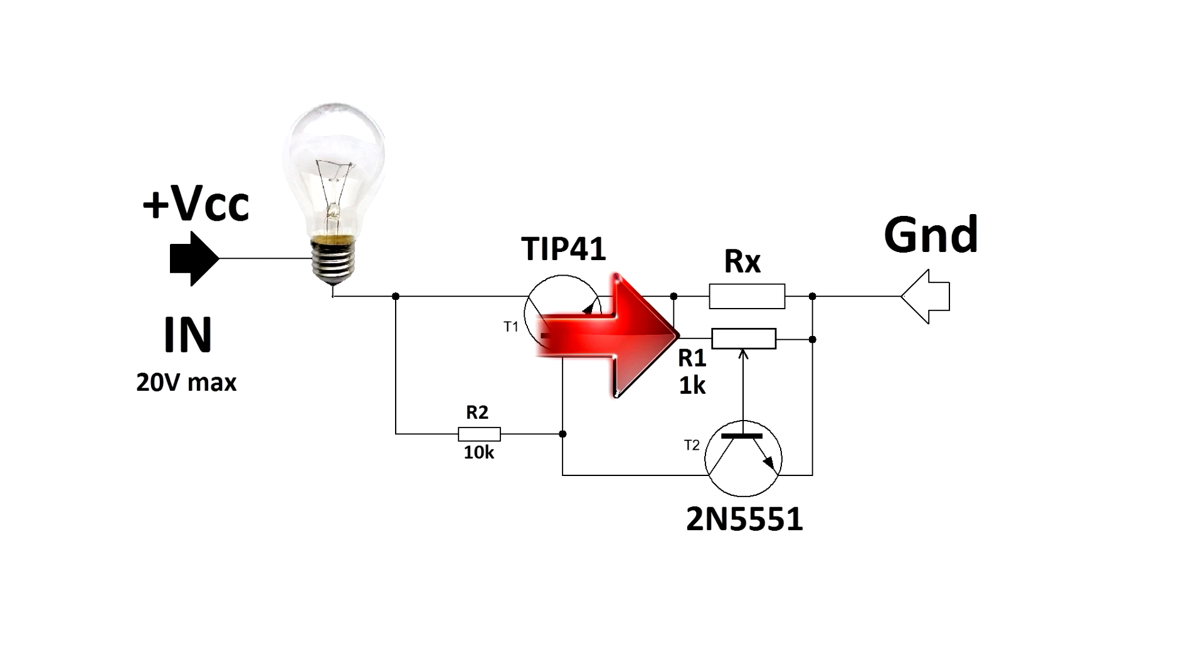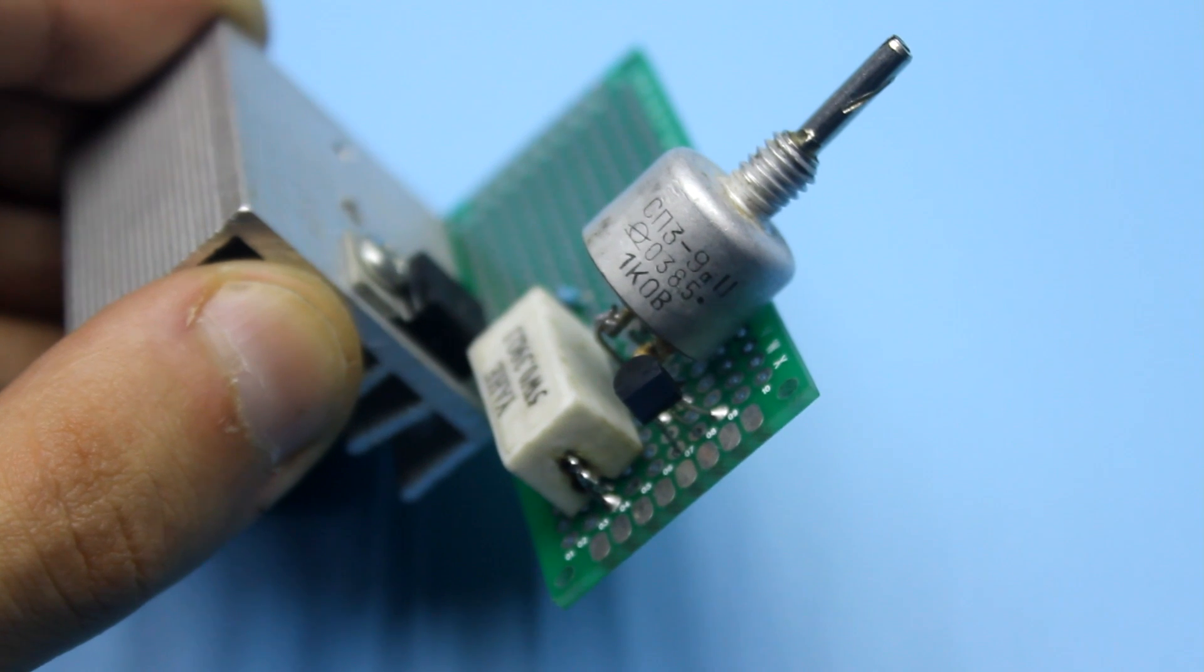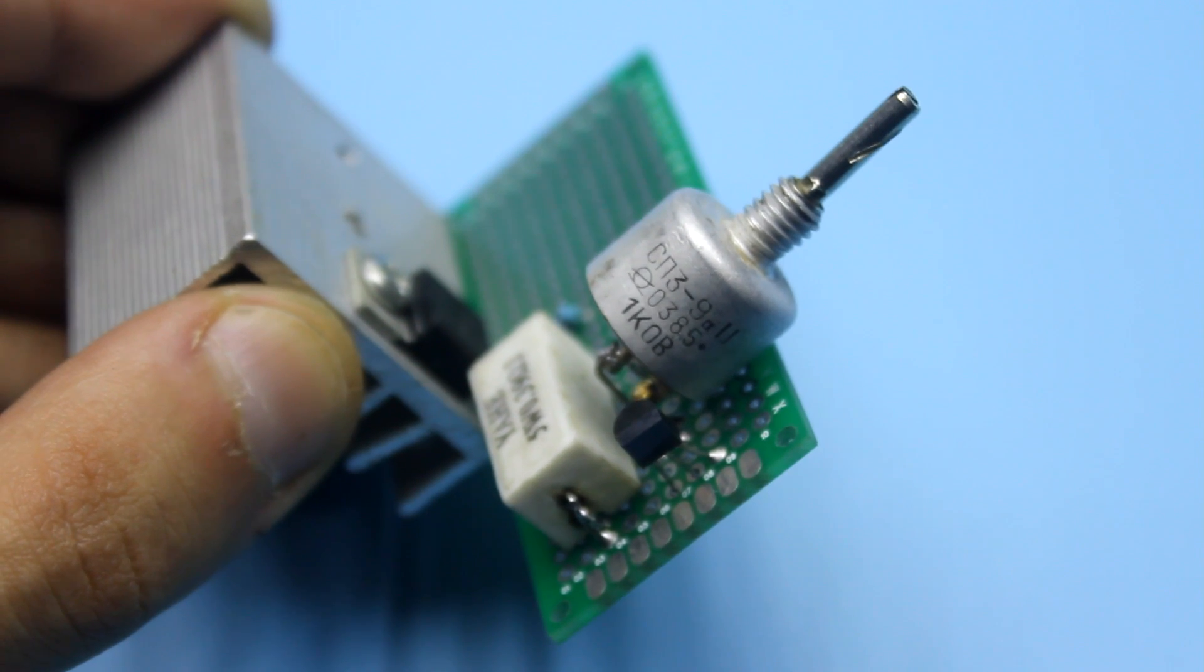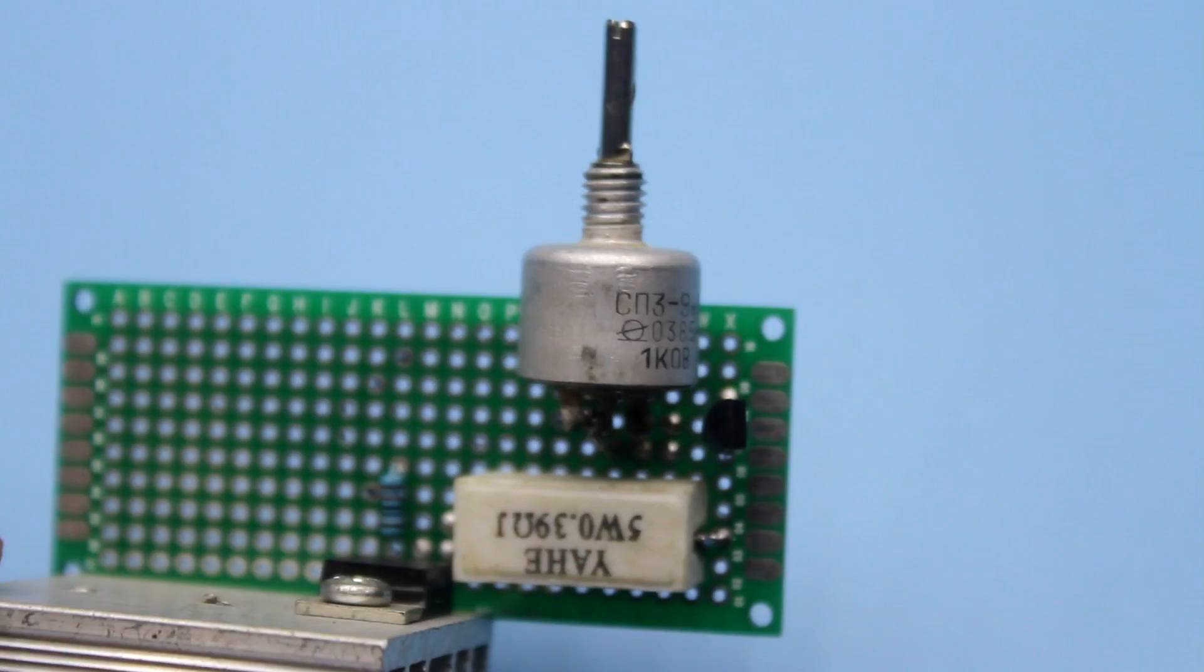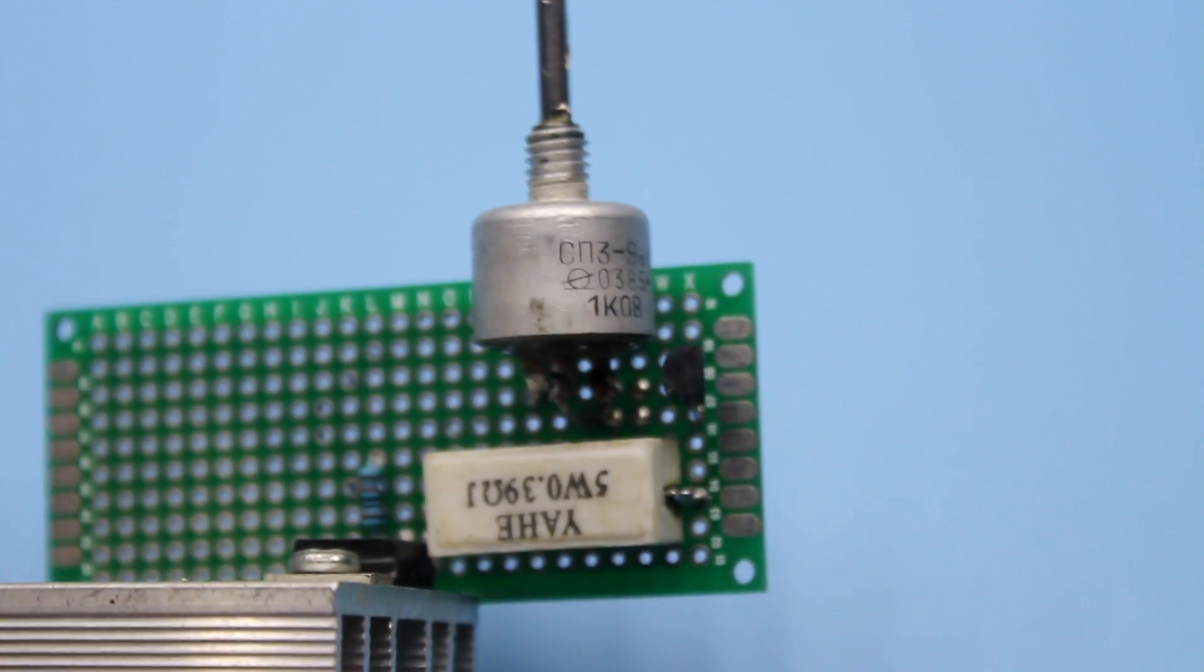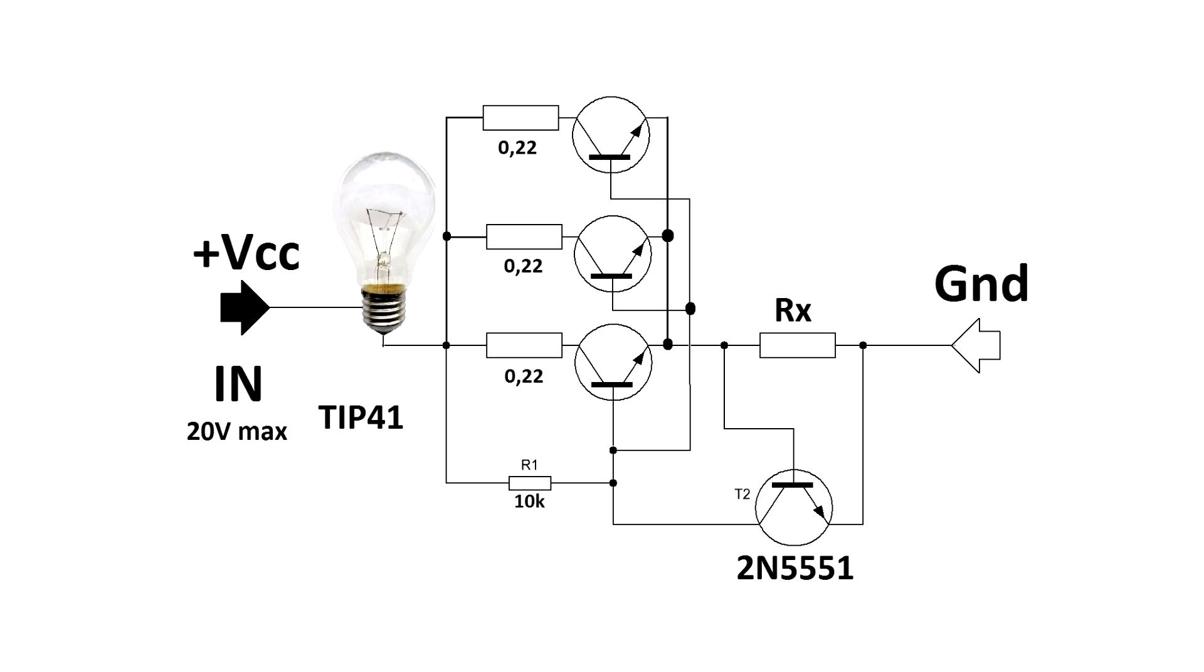Resistor R1 is essentially an ordinary voltage divider. With it, you can adjust how much the control transistor is open, and consequently, it is possible to control a power transistor by limiting the current flowing through it. The switching current of this circuit can be increased by additional power transistors connected in parallel.